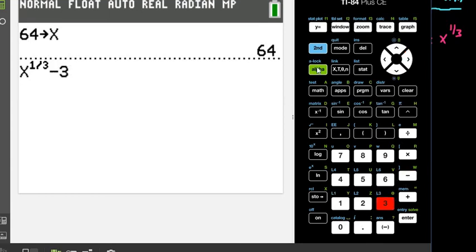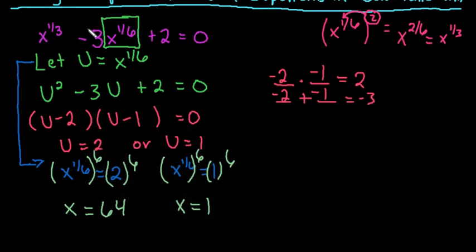And then we would do the same thing, minus 3, and then do alpha x, to the 1/6 power, plus 2. And we're going to see if that gives us 0, because that's what our equation was equal to. So all I did was I simply just plugged in this equation that I originally started with, the left-hand side, and I want to see, does it equal 0?